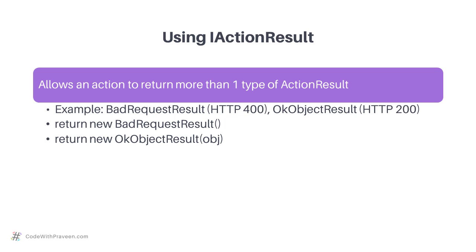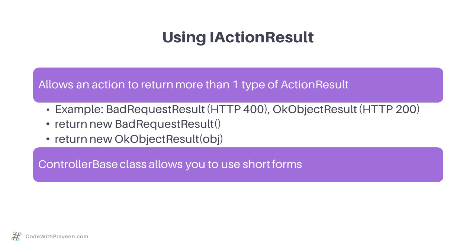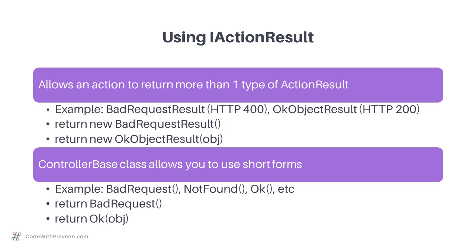When your action involves returning response data to the client, you just pass it to these action result types. For instance, returning new OKObjectResult of object returns the object and denotes a successful 200 status code. ASP.NET Core makes your life easier — the controller base class allows you to use short forms such as BadRequest, NotFound, OK and so on, so you can directly use return BadRequest or return OK of object.